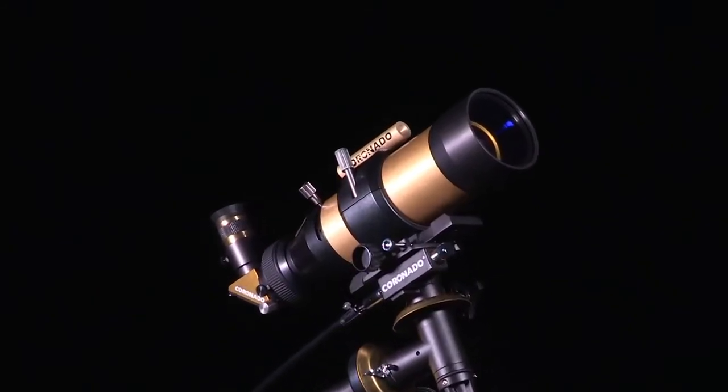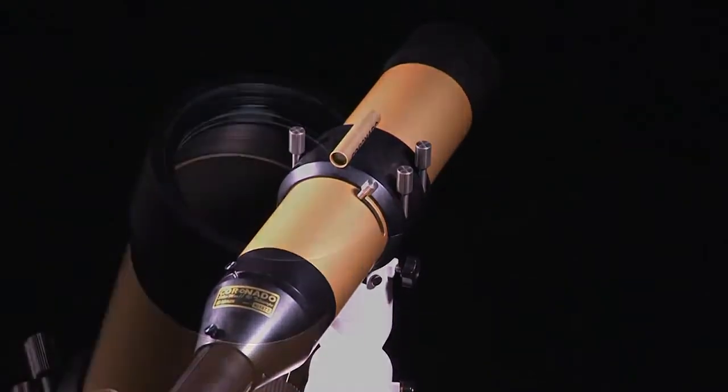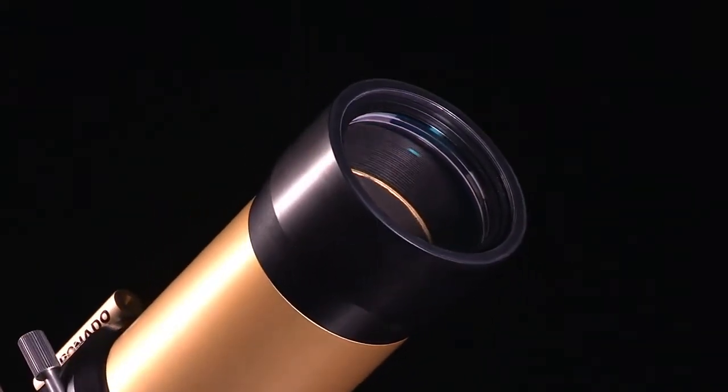Meade's Coronado SolarMax II comes in 60mm or 90mm apertures. These heavy-duty solar viewing scopes are the ultimate in solar observation.